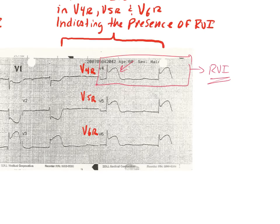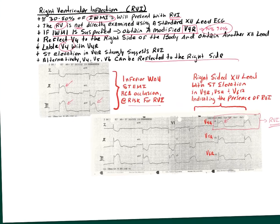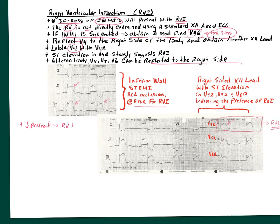RVI has important clinical implications: with a failing right ventricle, preload to the left ventricle is decreased. Therapies that tend to decrease preload may be potentially harmful. One treatment for RVI is to give fluid boluses to force preload into the right ventricle so blood can reach the left ventricle.